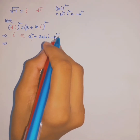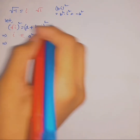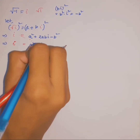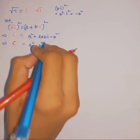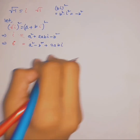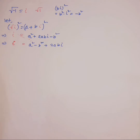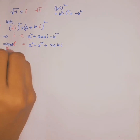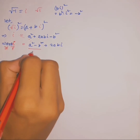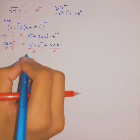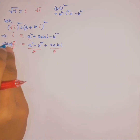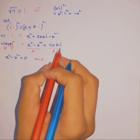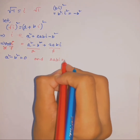Now we write the real part and imaginary part separately. So i equals (a squared minus b squared) plus 2ab·i. Since i is the same as 0 plus 1·i, the real part is 0 and the imaginary coefficient is 1. Equating real parts: a squared minus b squared equals 0. Equating imaginary parts: 2ab equals 1.